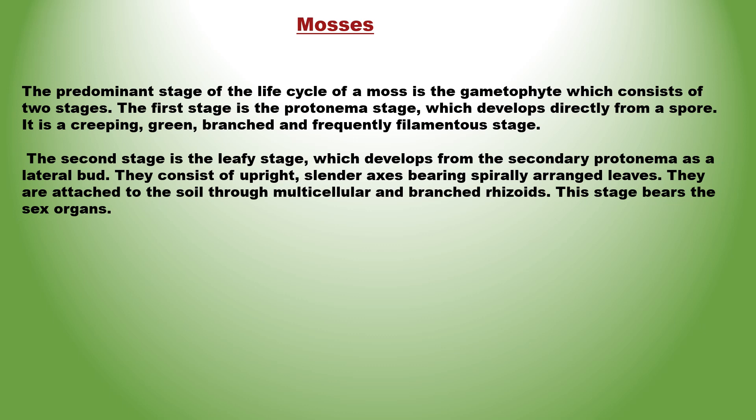The sex organs are antheridia and archegonia, produced at the apex of the leafy shoot. After fertilization, the zygote develops into the sporophyte, consisting of foot, seta and capsule. Spores are formed in the capsule after meiosis. The capsule opens to release spores, which on germination give rise to gametophyte.